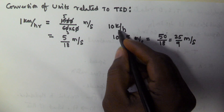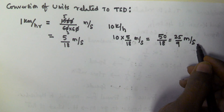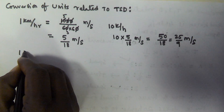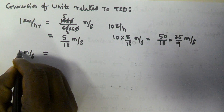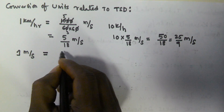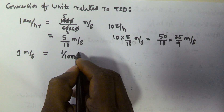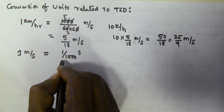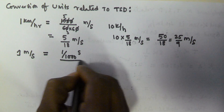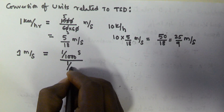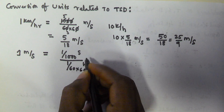That way you can convert kilometers per hour speed into meters per second. Now suppose one meter per second: one meter is going to be equal to one by thousand kilometers. And if one second is there, you want to convert that into hours, it is going to be equivalent to one by 60 into 60 hours.